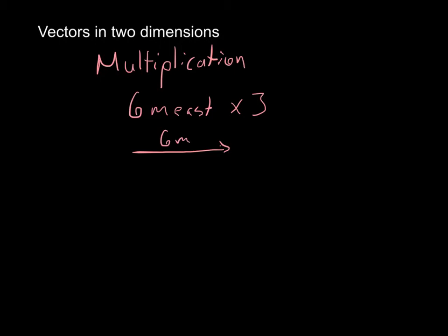So we've done a little bit of addition, a little bit of subtraction. We can also do multiplication. And when we multiply vectors, all we're going to do is multiply them by a scalar. So I might take my 6 meters east and then multiply it by the scalar 3. So if I did that, 3 times 6 is 18. So my original vector would have been this, 6 meters to the east.